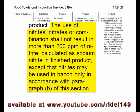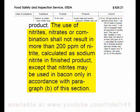Except that nitrites may be used in bacon only in accordance with paragraph B of this section — that's the section above this one. This is subsection C; subsection B is above this within the same law.